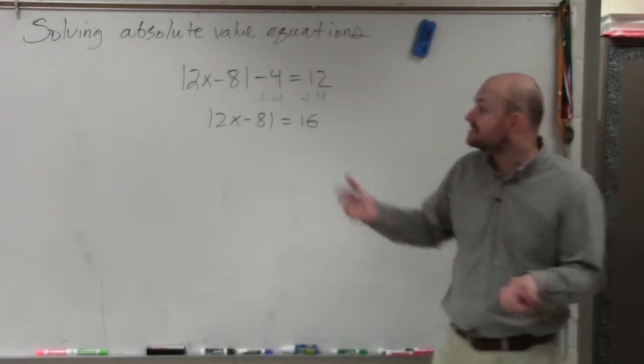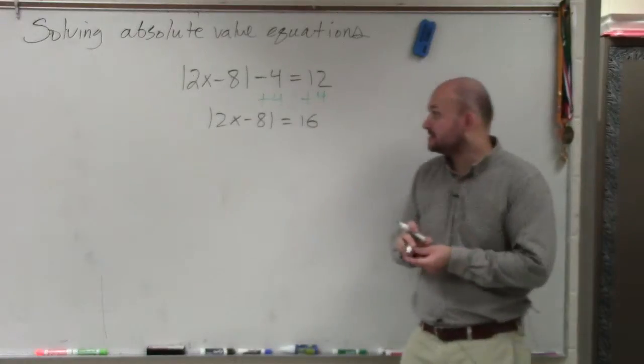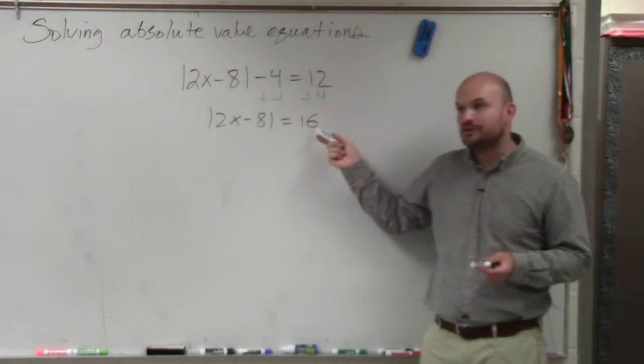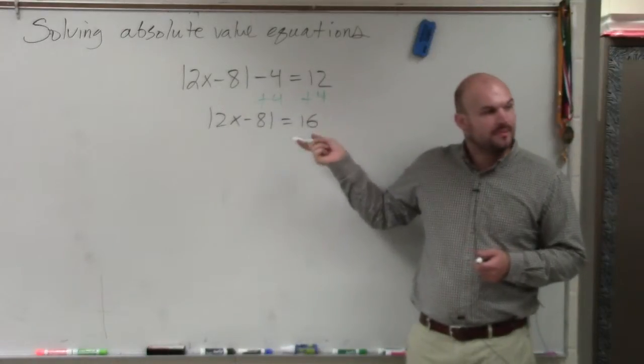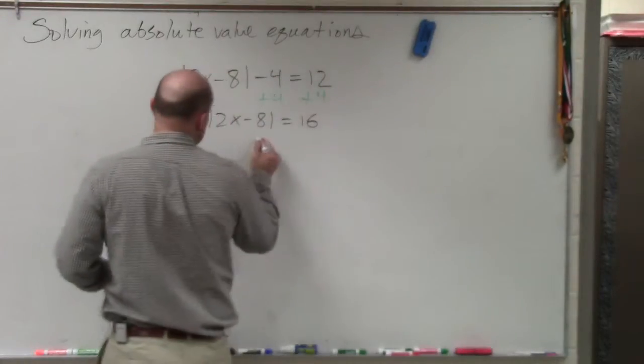Now, since my absolute value is isolated, I create our two cases. Again, your two cases, you're always going to have the quantity inside the absolute value the same. And then you just use this quantity and the negation of that quantity. And that's basically it. So we create our two cases.